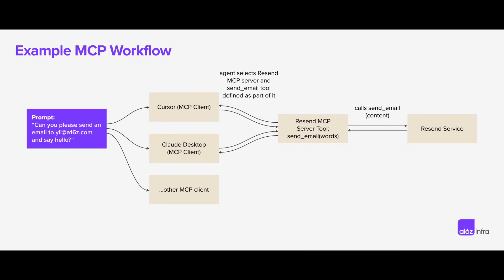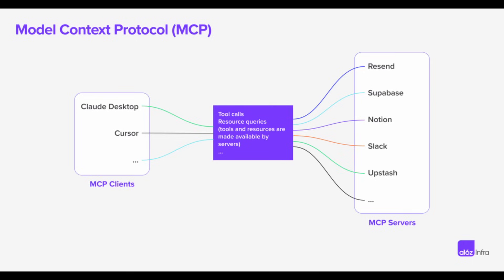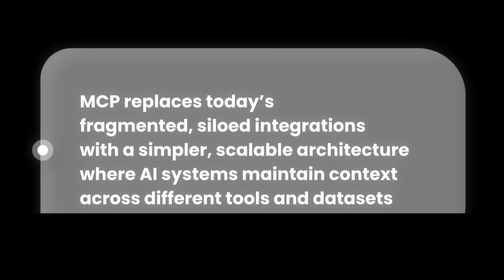The same MCP framework could let an AI assistant fetch your latest emails, post a message in Slack, query a SQL database — all through one common interface, just like a USB-C port. This standardization not only saves development time, it also means AI systems can seamlessly hop between different tools while keeping context. As Anthropic, the creator of MCP, explains: MCP replaces today's fragmented, siloed integrations with a simpler, scalable architecture where AI systems maintain context across different tools and datasets.